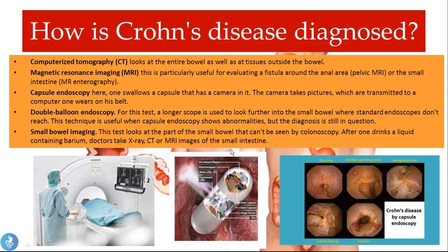Using capsule endoscopy, we can see fissuring in the bowel wall, multiple aphthous ulcers, serpiginous ulcers, the cobblestone appearance characteristic of Crohn's disease, and strictures in the bowel wall. All of these features are helpful in pointing towards the diagnosis of Crohn's disease.